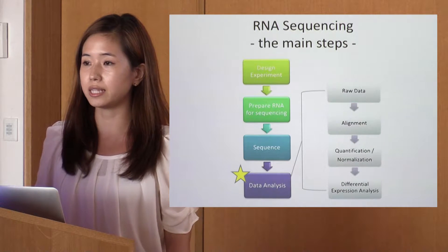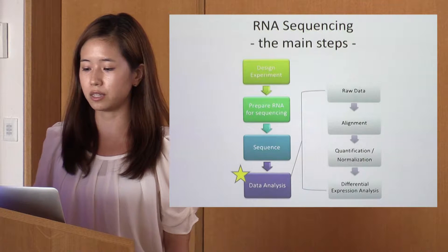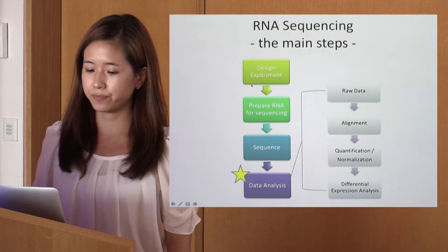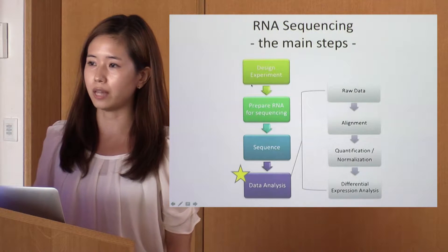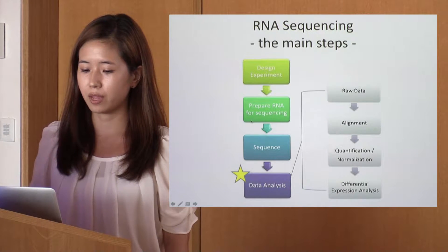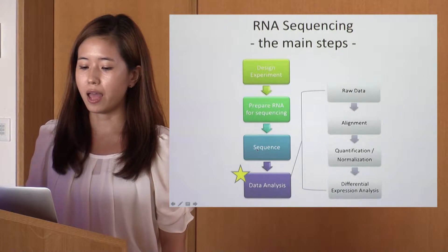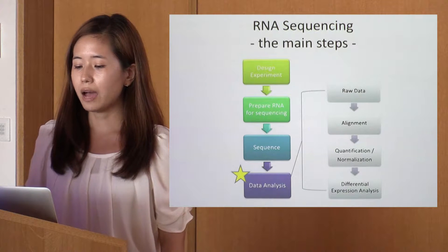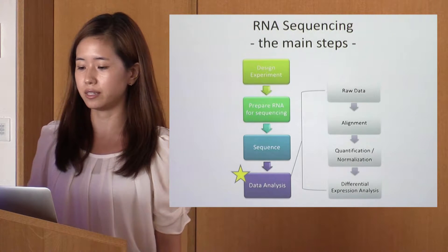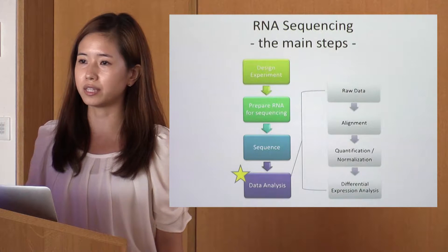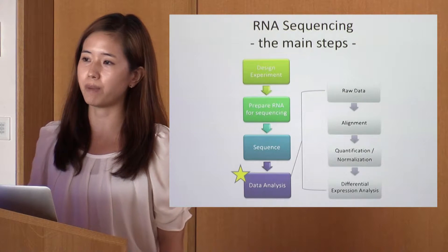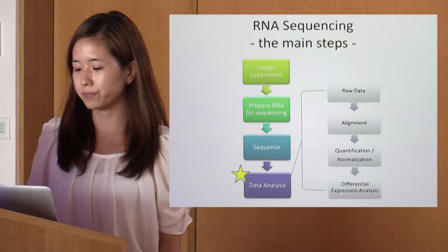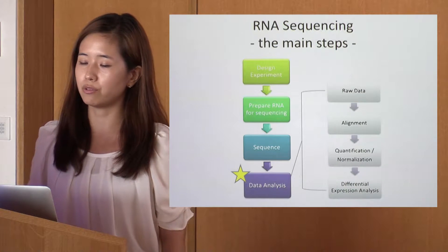A typical RNA-Seq experiment consists of four steps. It starts out with designing an experiment, then you prepare a library for sequencing, then you do the actual sequencing, and then comes data analysis. I was particularly intrigued by this data analysis step — where the raw data gets interpreted into biological conclusions through many different complex steps. This led me to where I am now.